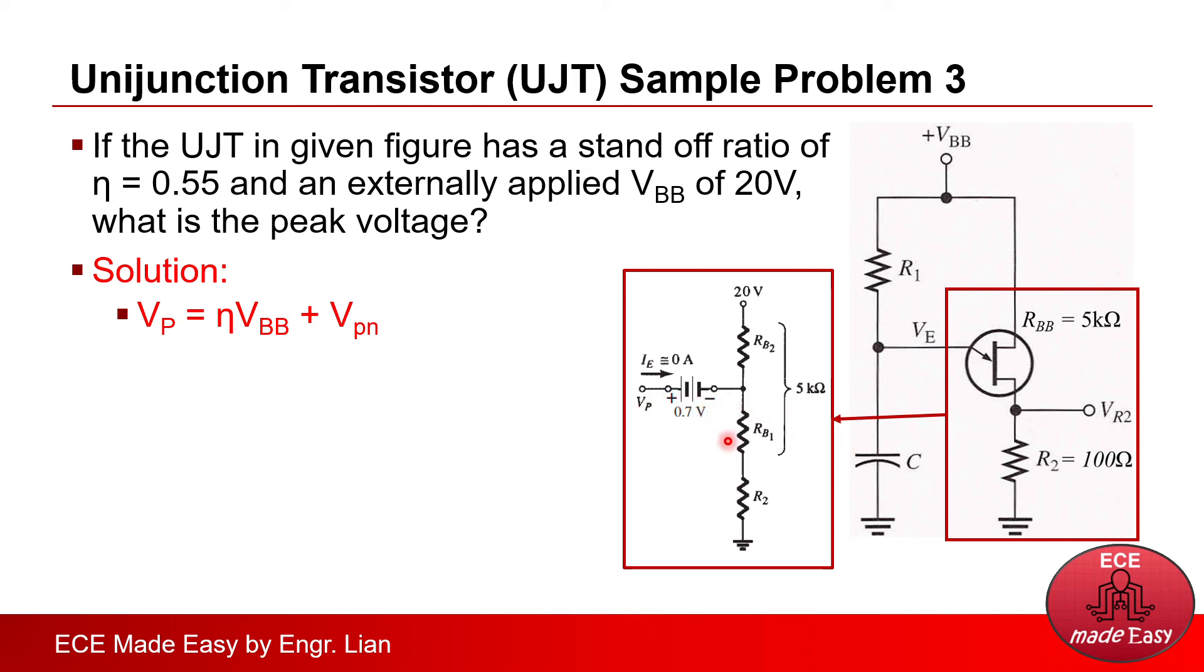But to get Vp, we need KVL here, which will pass through this diode and the series connection of Rb1 and Rb2. So, we are more concerned about a new variable here, which is V2. Thus, we will no longer apply this formula, but instead, Vp should be equal to V2, the voltage drop across the series Rb1 and Rb2, plus Vpn, which is 0.7V.